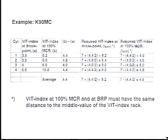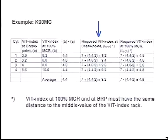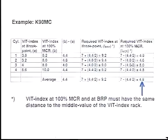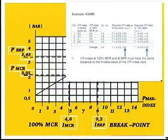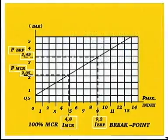Note down the VIT indexes at breakpoint and at 100% MCR and calculate the difference. Add half of this difference to the middle value of the VIT rack, and subtract half of this difference from the middle value of the VIT rack. Calculate the average VIT index at breakpoint and at 100% MCR. Determine the control air pressures corresponding to the average VIT index at breakpoint and at 100% MCR.